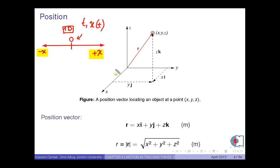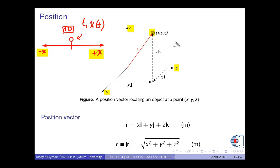Now, consider an object at any time moving in three-dimensional space. Here, we have three separate one-dimensional motions, namely the x-axis, y-axis and z-axis. Remember that this is the right-handed rectangular coordinate system.